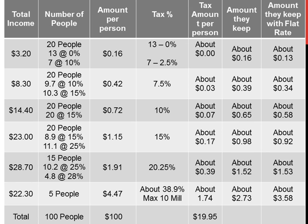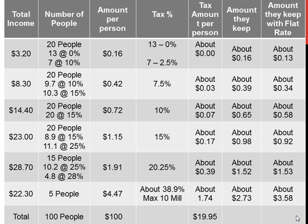So here's what a flat tax would do for everyone. The 20 people earning $0.16 would go home with $0.13 instead. The next 20 earning $0.42 would drop to $0.34. $0.72 would drop to $0.58. $1.15 would drop to $0.92. The next group would actually end up with slightly more — instead of $1.52, they'd end up with $1.53, because their rate is now less than 20.25%. The top earners would be impacted most positively: instead of going home with $2.73 each, they would go home with $3.58 each, as their rate drops from 38.9% down to 19.95%.